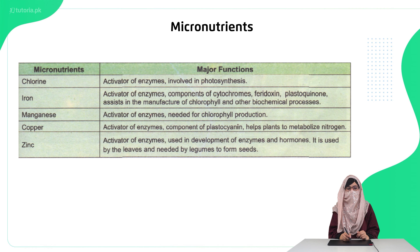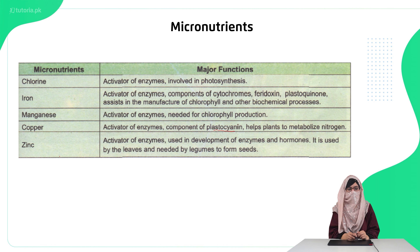Magnesium is also an activator of enzymes and is necessary for chlorophyll production. Copper is also an enzyme activator and is a component of plastocyanin in the electron transport chain in the chloroplast; it also provides the ability to metabolize nitrogen. Zinc is again an activator of enzymes and is also required in enzyme construction and in hormone development.